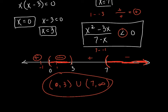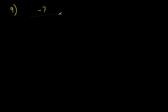Let's do number 9, because yesterday we did one where we had a constant in the denominator but not in the numerator. So let's try number 9 — that looks a little bit different. It's negative 7 over negative 6x minus 3, and that is greater than 0.